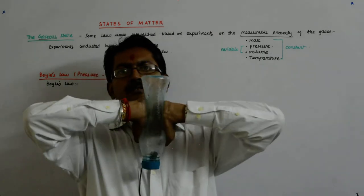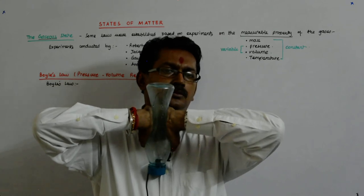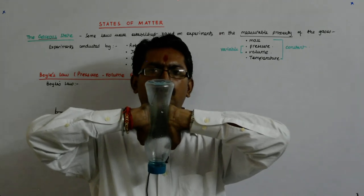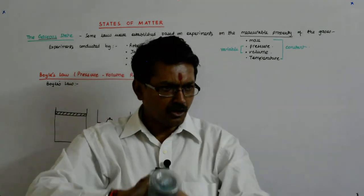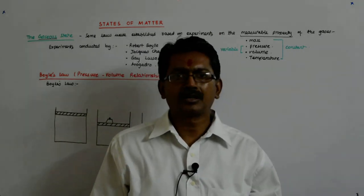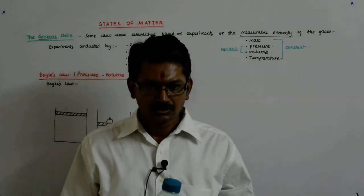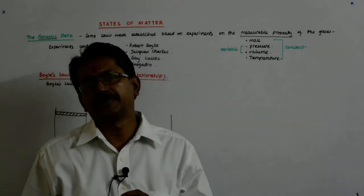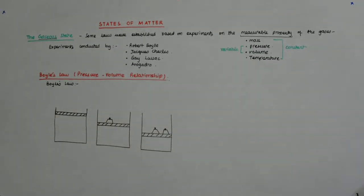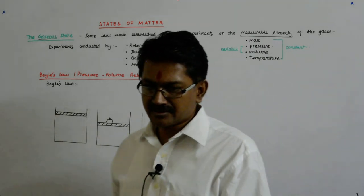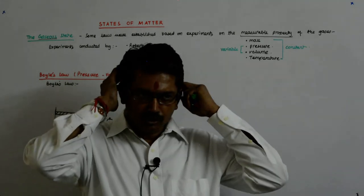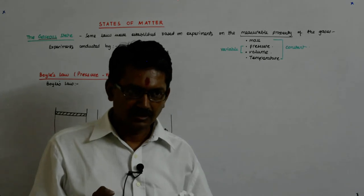What has happened to the volume? The volume has gone down because it has got squeezed — the bottle got squeezed. So the volume has gone down. This is the experiment he conducted, but his credit is finding out what the exact relation is. He said: if the volume goes down, the pressure goes up; or if the pressure goes up, the volume goes down.